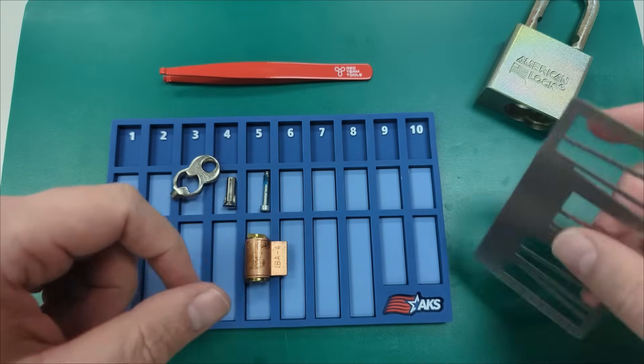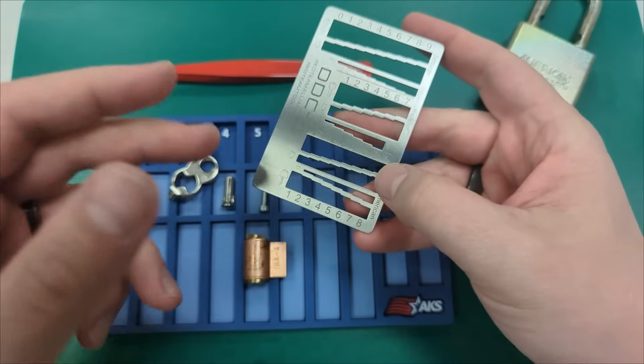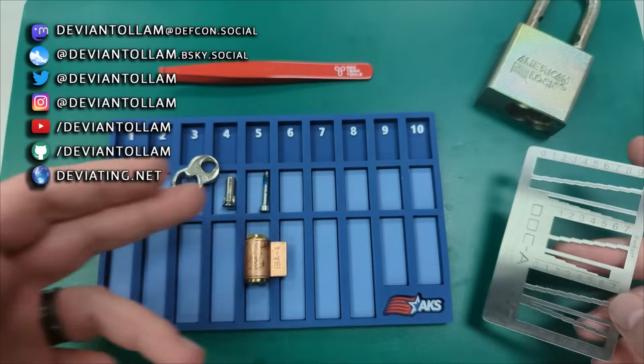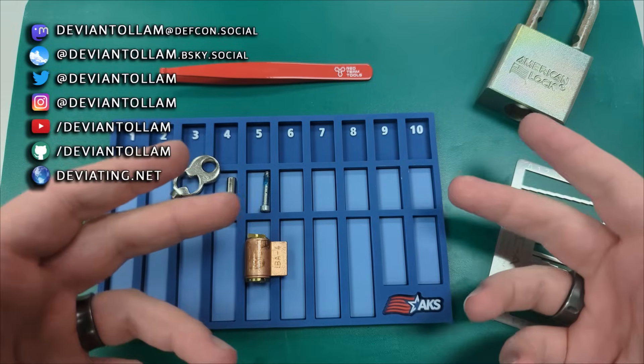Hey everyone, hopefully this should be a pretty simple and maybe even quick video using the Devious Decoder card to actually find out the bitting of a lock so you can make a key.